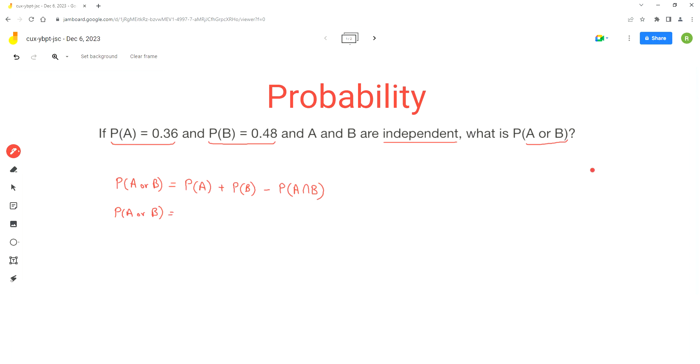So the left side stays the same. Probability of event A is 0.36 plus the probability of event B is 0.48 minus. Now since these events are independent events, we can use another formula for independent events to calculate the probability that A and B happen together.